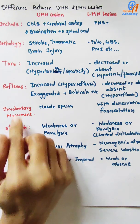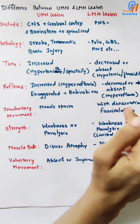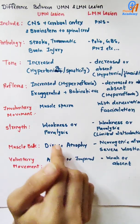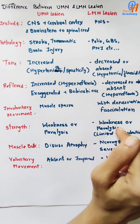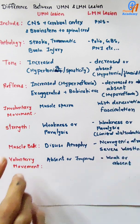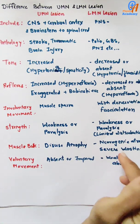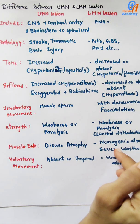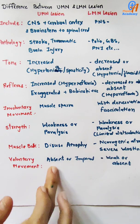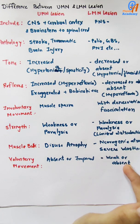In UMN lesion, involuntary movement presents as muscle spasm in flexor or extensor muscles. In LMN lesion, denervation causes fasciculation. In UMN lesion, there is weakness or paralysis. In LMN lesion, weakness or paralysis occurs in a limited, segmental, or focal distribution. In UMN lesion, disuse atrophy of muscle bulk is seen; in LMN lesion, neurogenic atrophy or severe wasting is seen. In UMN lesion, voluntary movement is absent or impaired with a synergy pattern; in LMN lesion, voluntary movement is weak or absent.